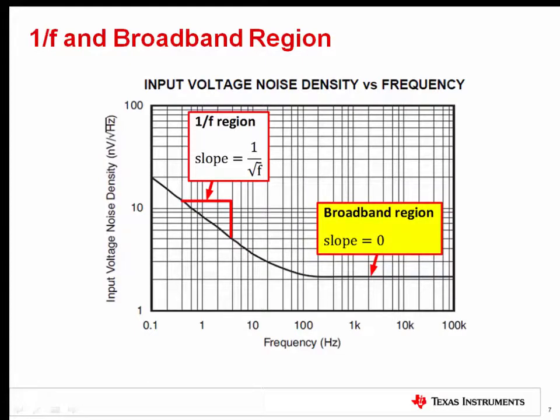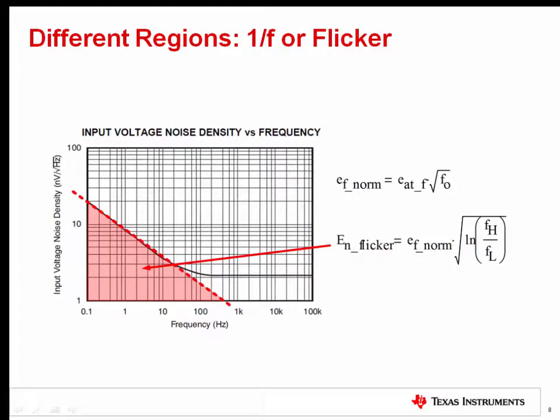First, let's take a closer look at 1 over F noise. To get the total RMS noise associated for the 1 over F region, we have to integrate the power spectral density and take the square root of the result. Using this method gives the formulas shown on the right. Later on, we will discuss these equations in detail and work through a real world example.